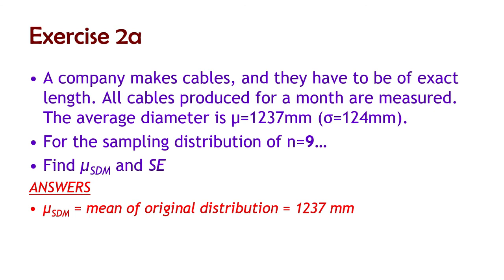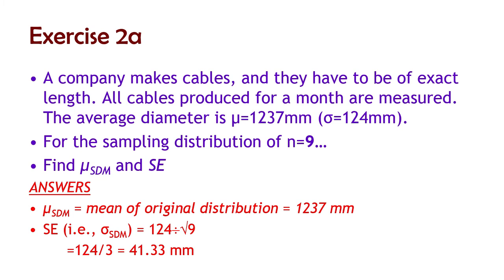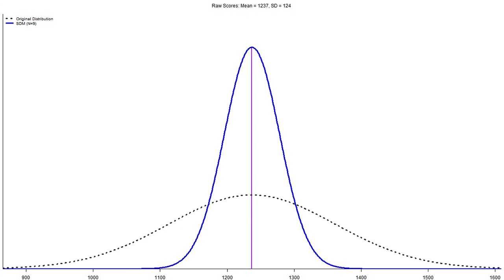The mean is the same as the original distribution — 12.37, or about 1.2 meters. The standard error is the original standard deviation of 124 millimeters divided by the square root of the sample size, so divided by 3. That gives us 41.3 millimeters instead of 124 millimeters. This is how the raw score distribution and the sampling distribution compare for a sample size of 9.